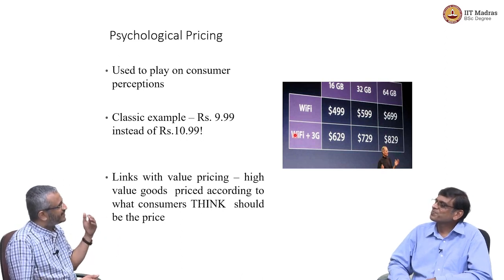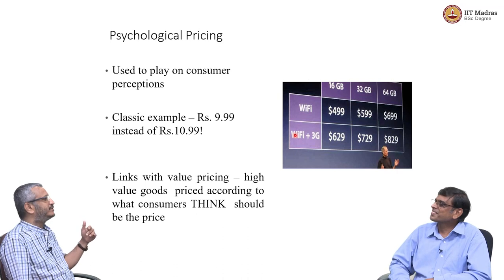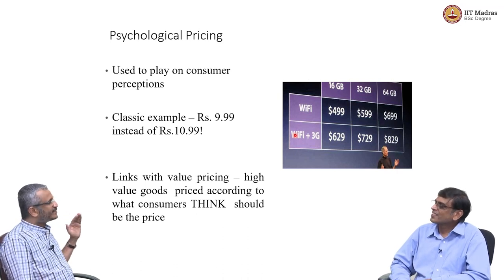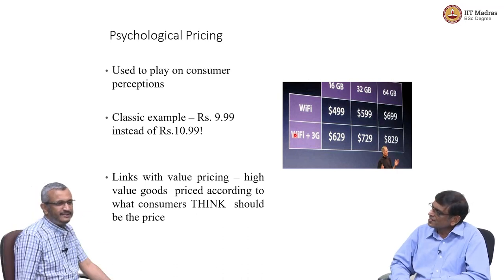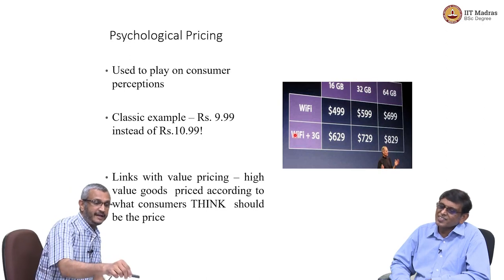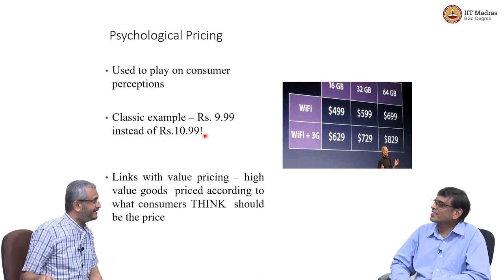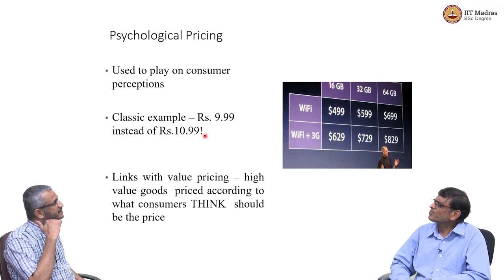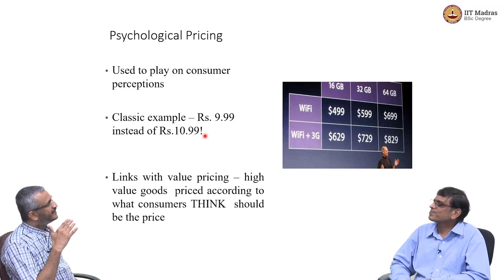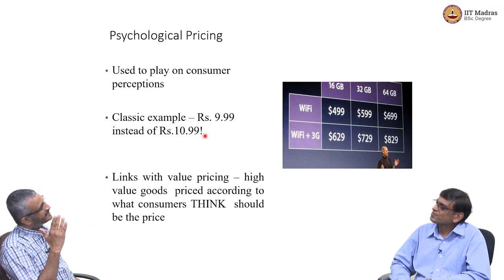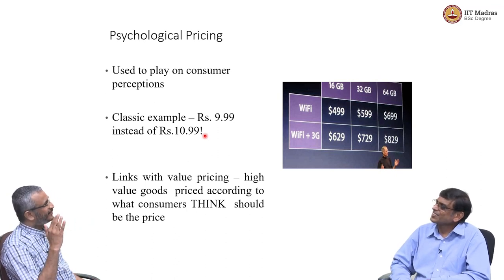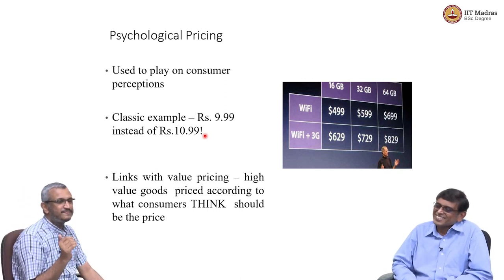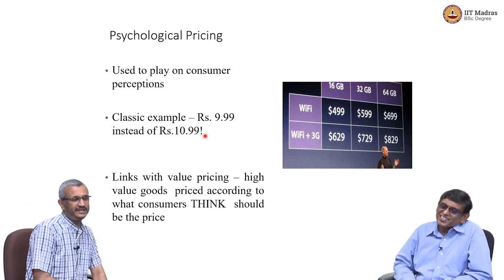The consumer's mental threshold means that a price of 9.99 keeps the product just within their comfort zone. The price could have been 10.99 — effectively 11 — but the firm does not want to cross the threshold of 10. Bata's historical strategy of 19.95 or 20.95 was precisely this kind of psychological pricing.